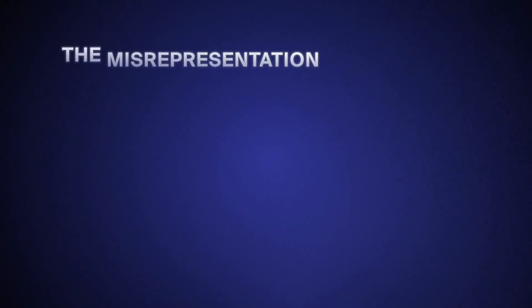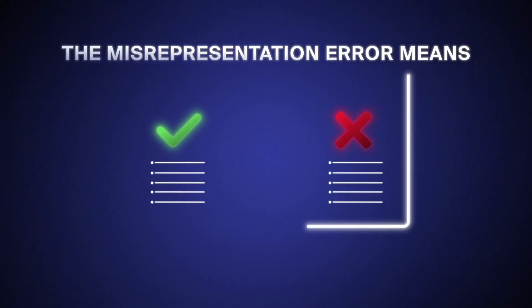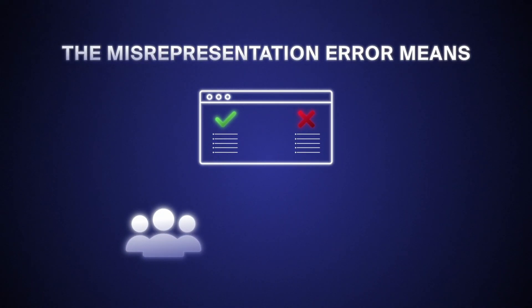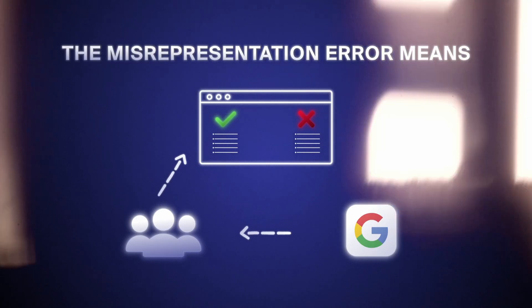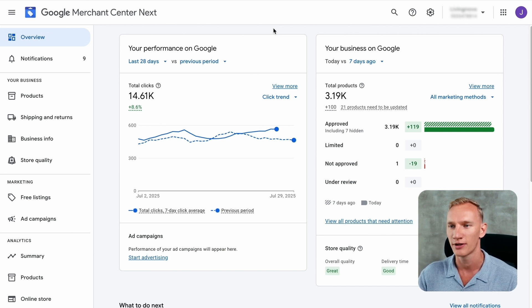In the eyes of Google's policies, the misrepresentation error means that you have something, or you don't have something, on your website that should be there for the visitors that Google is guiding towards your website. Because your time is valuable and you're looking for a solution, let's dive right into my screen. Here we are in an active Merchant Center account, and I'm going to show you the four steps you need to have in place to solve the misrepresentation error.